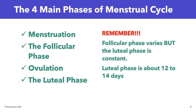The menstrual cycle has 4 phases: the menstruation phase where you have your menstrual flow; the follicular phase when the eggs begin to form after menstruation; the ovulation phase when the fully formed egg is released; and the luteal phase, which is the period after ovulation.